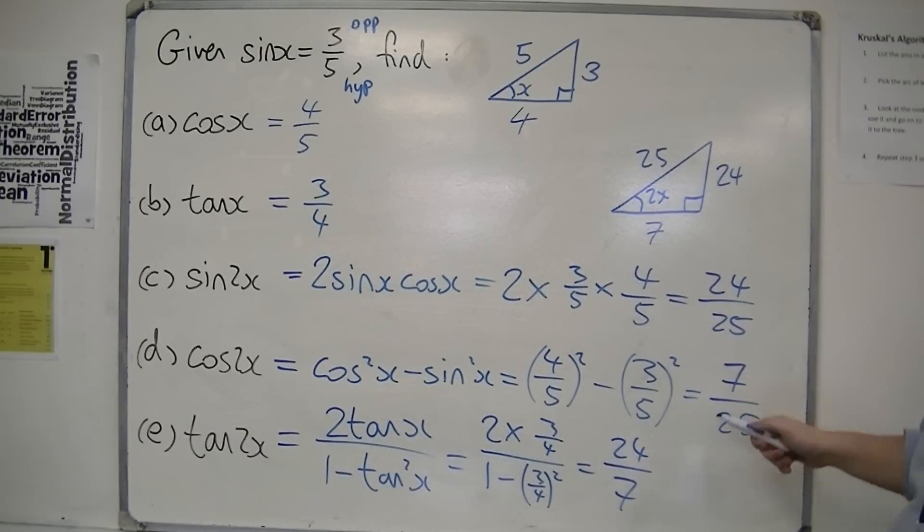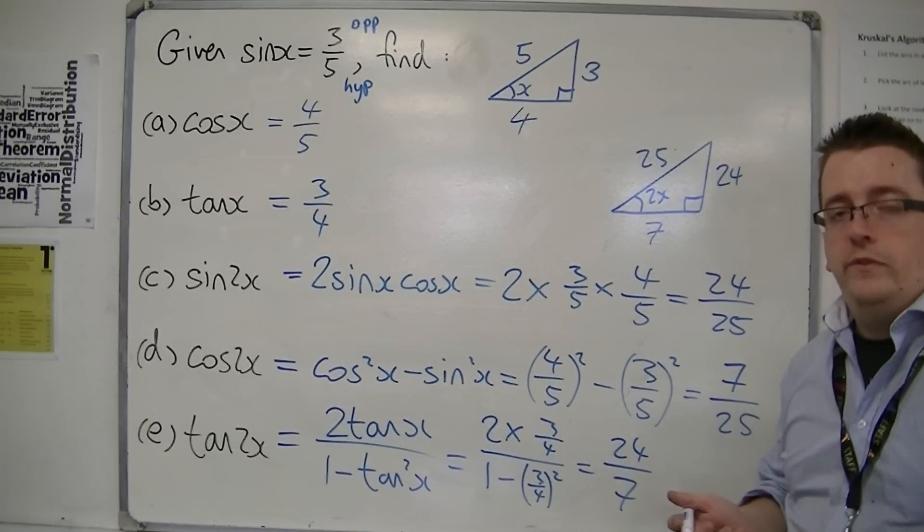So cos 2x is adjacent over hypotenuse, 7/25, and tan 2x is opposite over adjacent, 24/7.